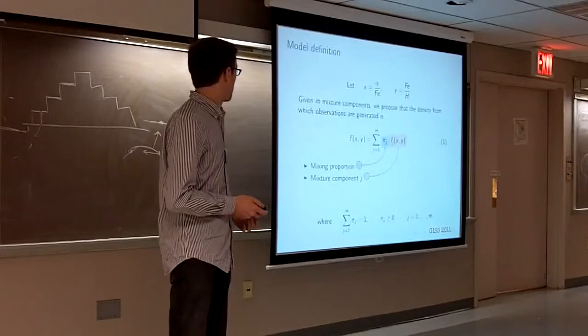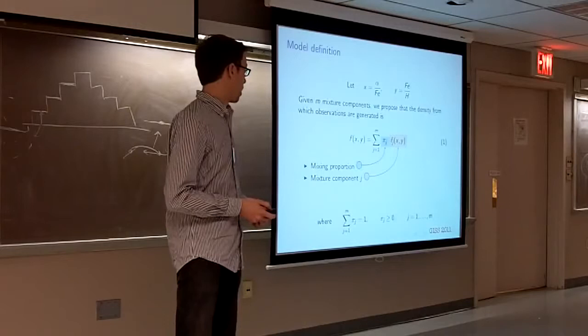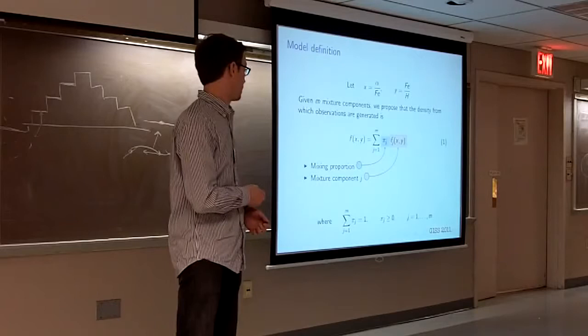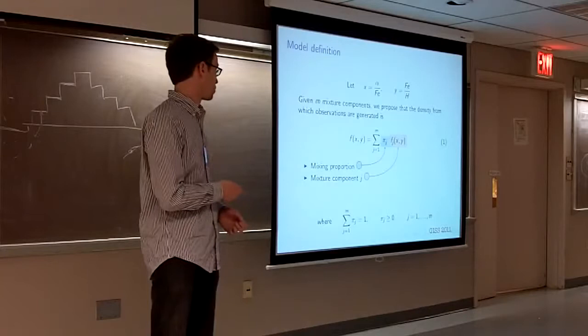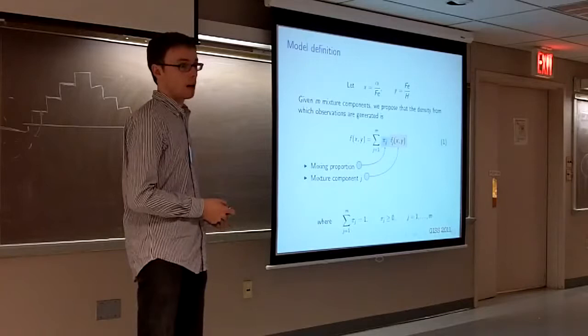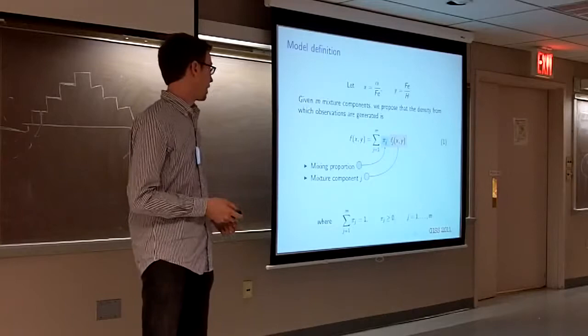In a little more detail, if we let X be alpha over Fe and Y be Fe over H, our model, given M mixture components, is as follows. It is a weighted sum of the M mixture components, where the mixture proportion is denoted by pi J. And that denotes, again, the percentage of the observations that come from that particular mixture component. And the mixture component, F_J, is one of the given components that Dwayne showed you earlier. The mixing proportions themselves have to sum up to 1, and each one must be greater than or equal to 0.